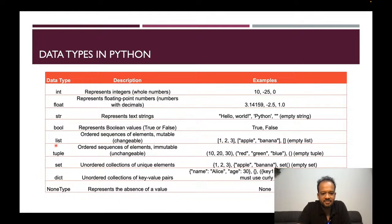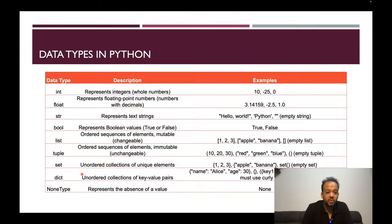Now let's come to list. A list is an ordered sequence of elements which is mutable. Here we are entering the realm of data structures. We will continue with these data structures in the next session, going into each one in depth. In the meantime, as I promised at the beginning, there is a short quiz to test your understanding of the four data types — int, float, string, and bool. Let me launch the quiz now.